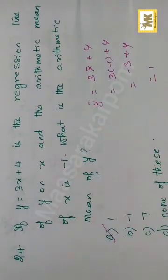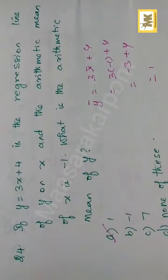Question number 24. If y is equal to 3x plus 4 is the regression line of y on x, and the arithmetic mean of x is minus 1, what is the arithmetic mean of y? Substitute the arithmetic mean of x into the equation to get the arithmetic mean of y.